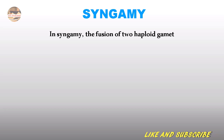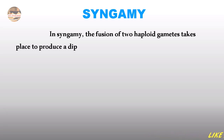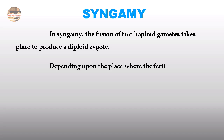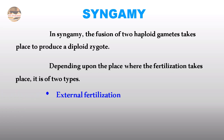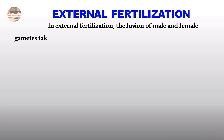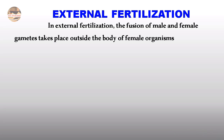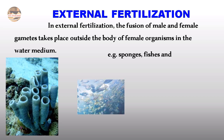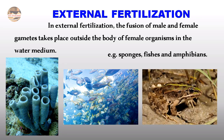In Syngamy, the fusion of two haploid gametes takes place to produce a diploid zygote. Depending upon the place where fertilization takes place, it is of two types: External Fertilization and Internal Fertilization. In External Fertilization, the fusion of male and female gametes takes place outside the body of the female organism in a water medium. Examples are sponges, fishes, and amphibians.